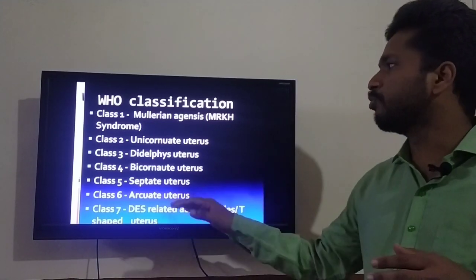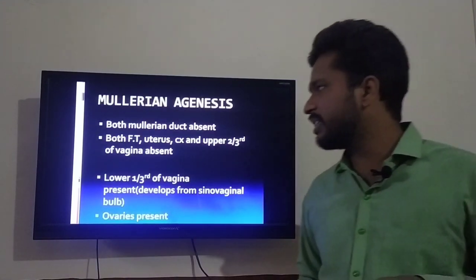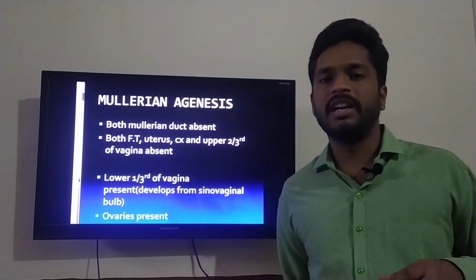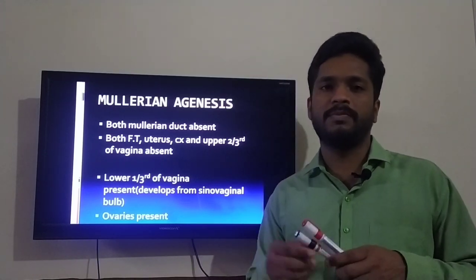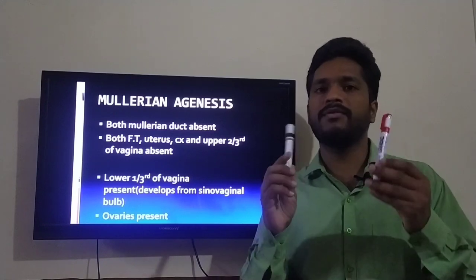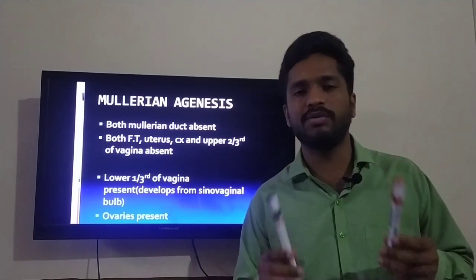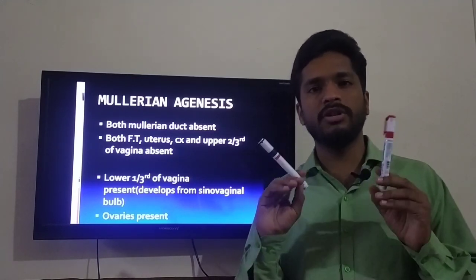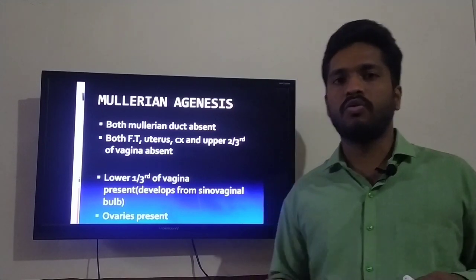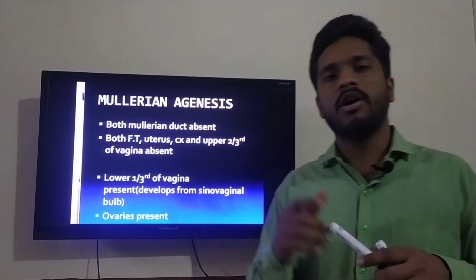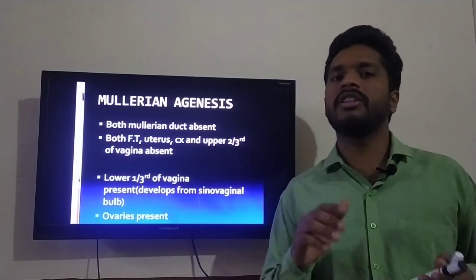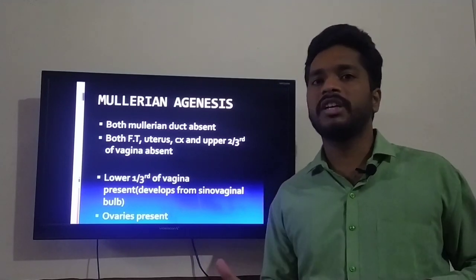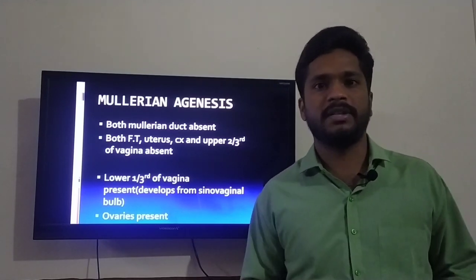In Mullerian agenesis, both the right and left Mullerian ducts are absent. As a result, all the internal genitalia formed by the Mullerian ducts will also be absent.